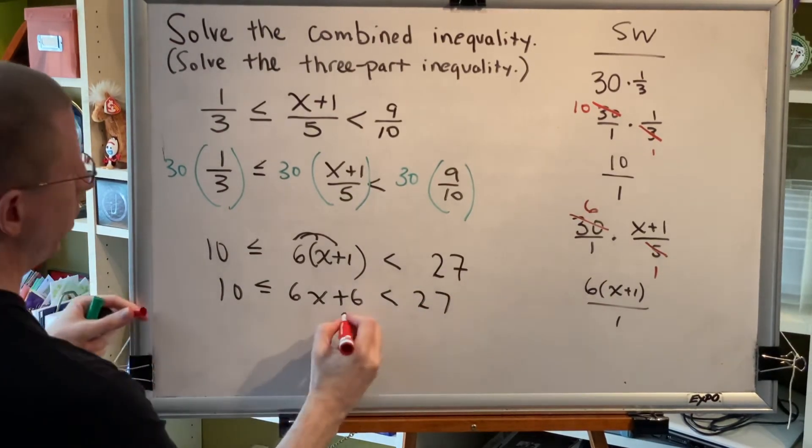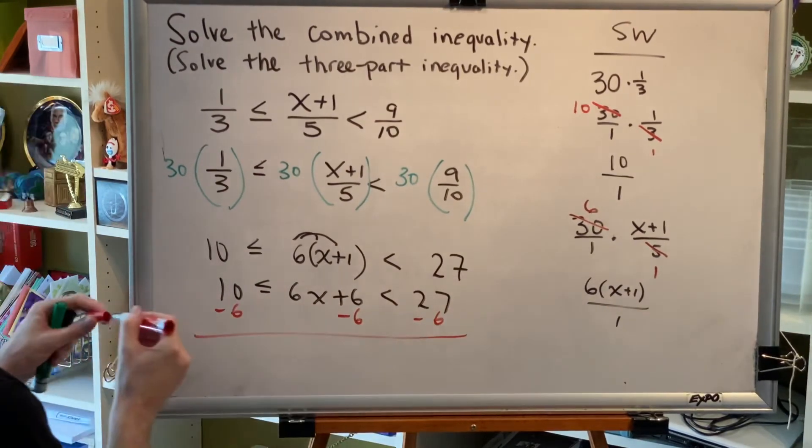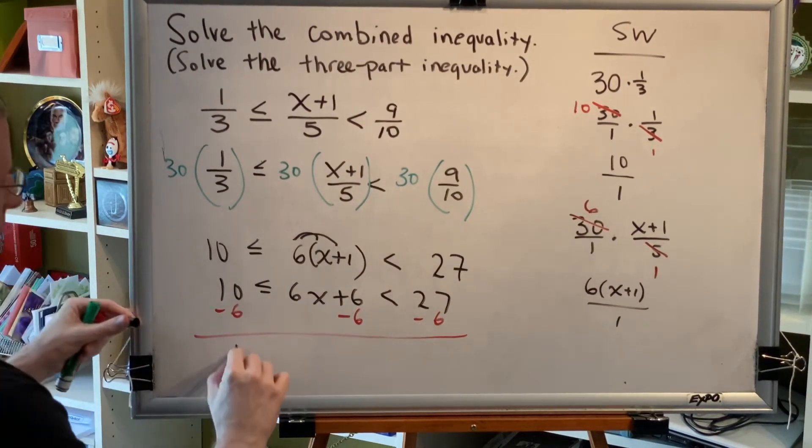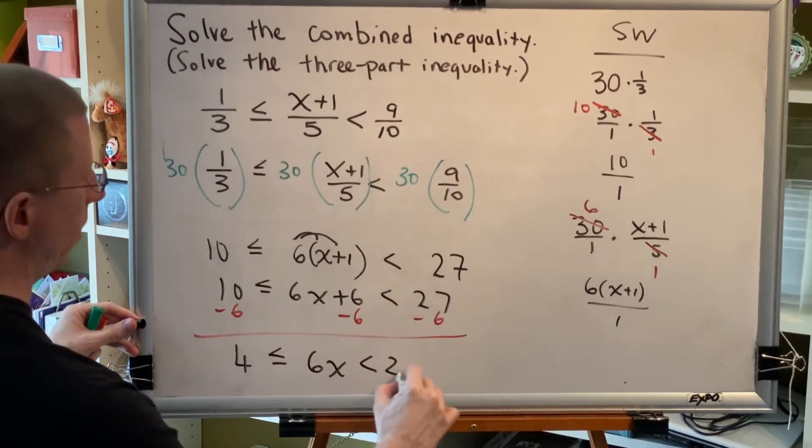Next, get rid of the plus 6 by subtracting in all three zones. 4 is less than or equal to 6x is less than 21.